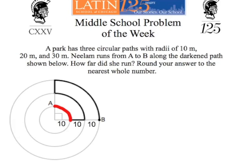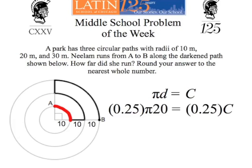We're going to start with the first quarter circle, a quarter of the inner circle with radius 10. We remind ourselves that pi times the diameter is the circumference, so we want to take a quarter of the circumference. That's why we use 0.25. If the radius is 10, the diameter is 2 times the radius, or 20. We do 0.25 times 20 and we get 5, leaving it in terms of pi. So that's 5 pi.